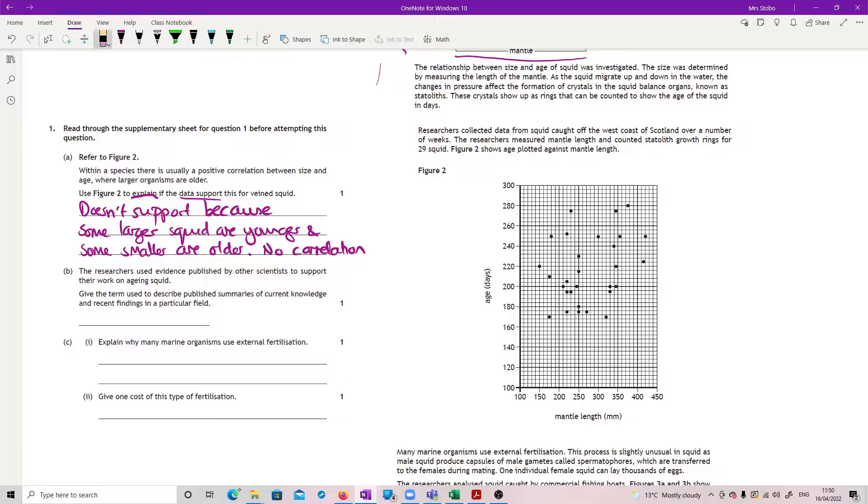Researchers use some evidence published by other scientists to support their work on aging squid. Give the term used to describe published summaries of current knowledge and recent findings in a particular field. So this one here, just give. This is something from your content statements. This is a review. That's it.